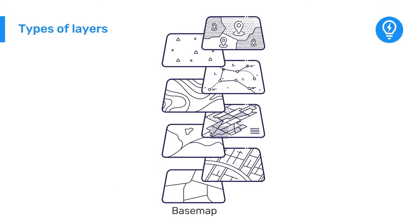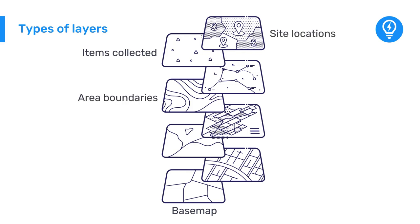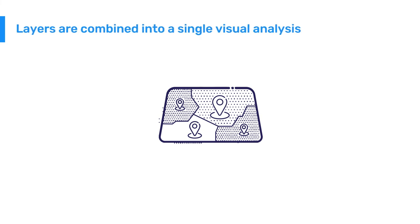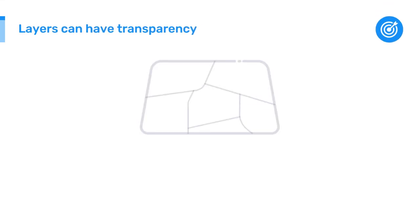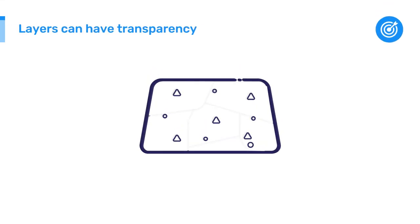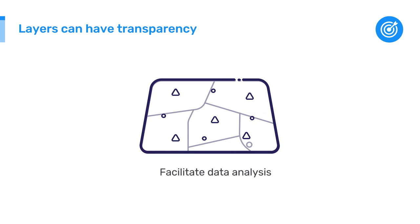Each additional layer can show data such as data items collected, site locations, area boundaries, climate data, or population, among others. Layers are stacked on top of each other and combined into a single visual analysis. Layers can also have their transparency adjusted, which determines the degree to which the layers blend into each other visually. Using these features, we can create maps to facilitate data analysis.